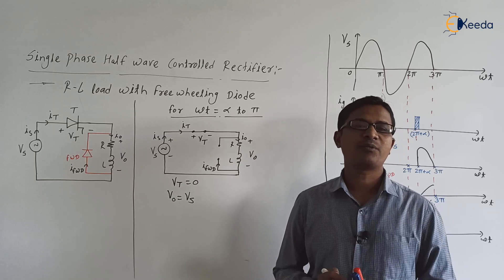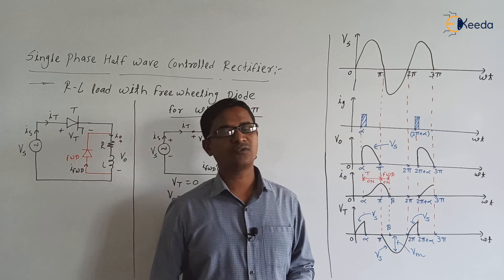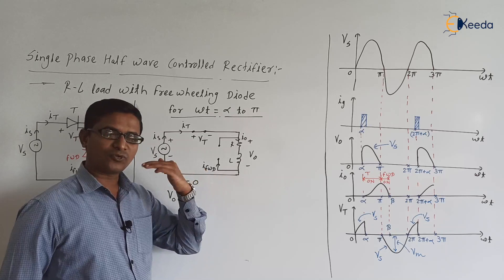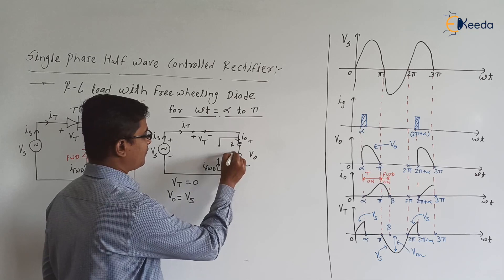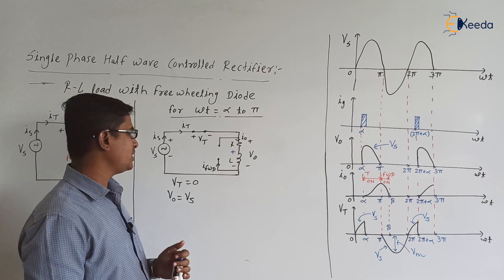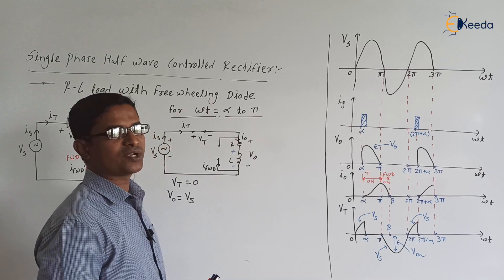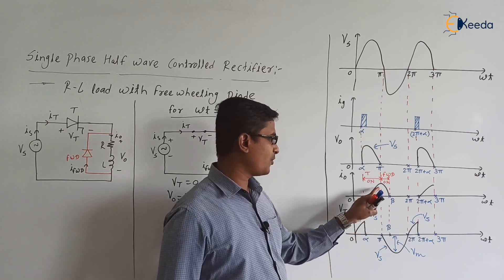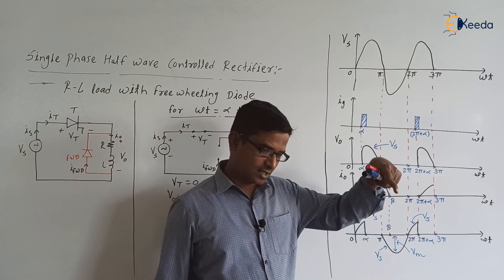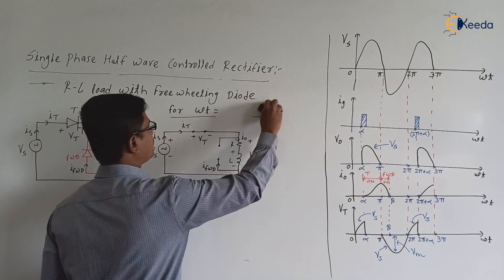However, the inductor opposes the sudden change in current. Before α, the inductor current was 0, so the current cannot increase suddenly at α. Therefore, the current through the inductor increases slowly. During α to π, the inductor stores energy and I0 increases slowly. So from α to π: V0 equals supply voltage, I0 is increasing, thyristor is on, and Vt = 0 V. At ωt = π, the load current is positive.